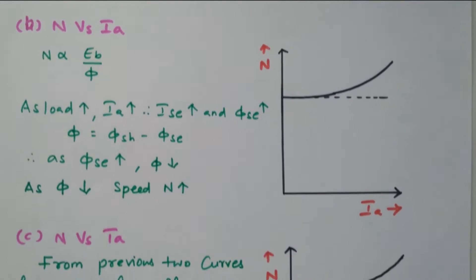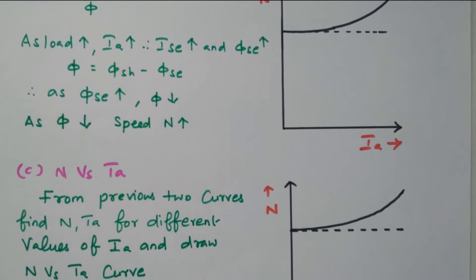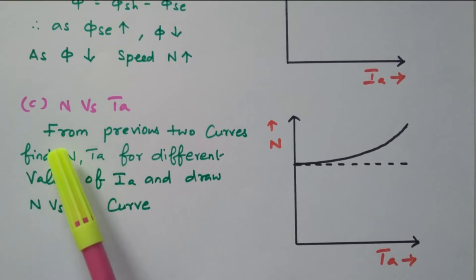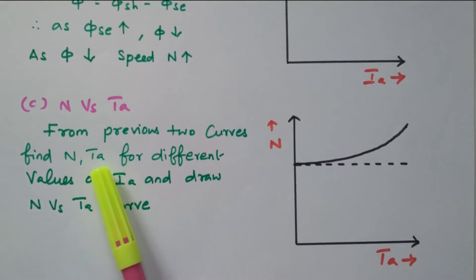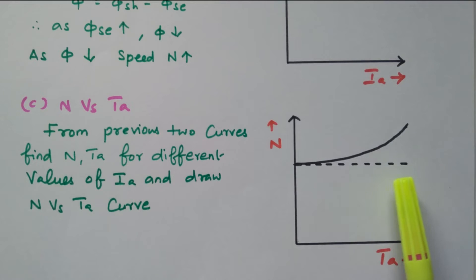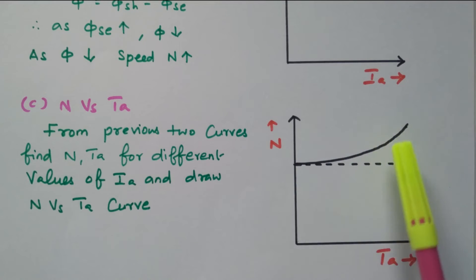Now the third characteristic: speed versus armature torque, N versus Ta. This is drawn from the previous two curves by finding speed and armature torque for different values of armature current. The dotted line is the no-load speed. When the load increases, the speed also keeps on increasing — when the torque increases, the speed also increases.